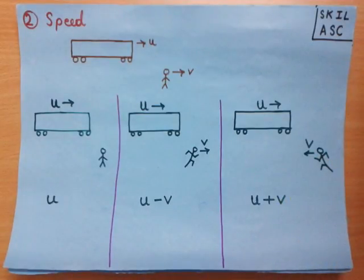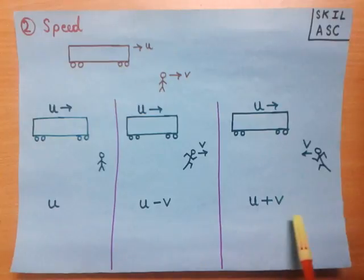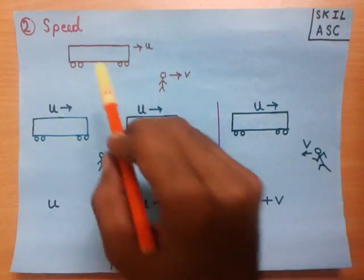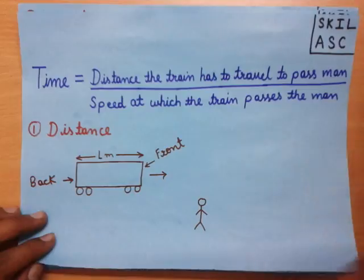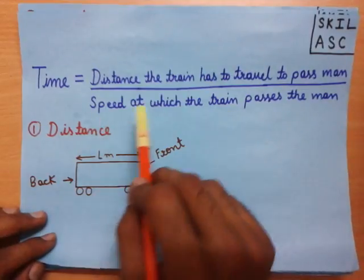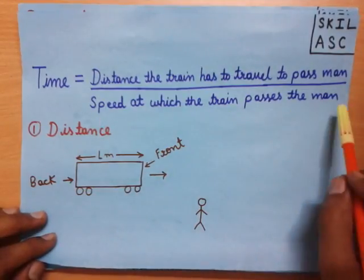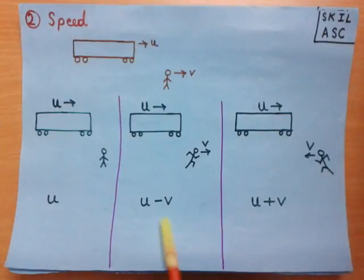These relative speeds are the speeds at which the train passes the man — one of these relative speeds applies depending on the situation.